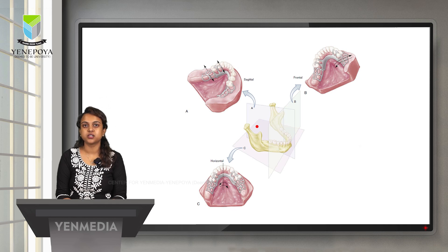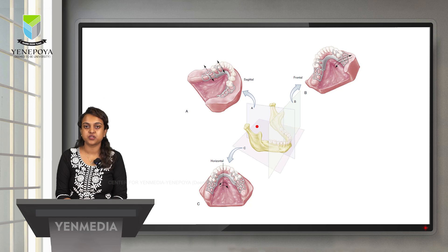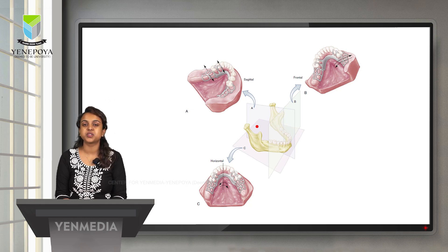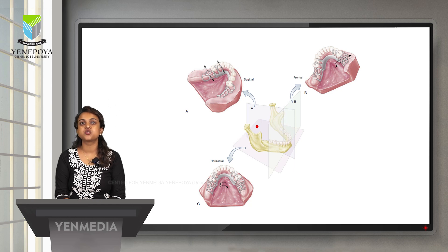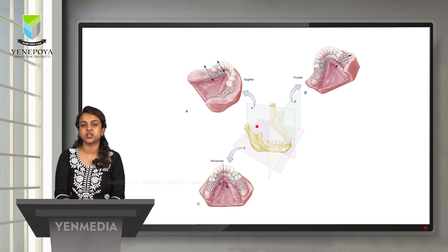When opting for a removable option, we need to consider the stresses acting on the prosthesis. The forces present in the mouth — horizontal, vertical, and lateral forces — cannot be neglected. Our main idea when giving a prosthesis is to minimize these forces so the prosthesis will not impinge on the tissue. We need to preserve what is already there rather than destroying it, and we need to control and dissipate forces in a proper way.